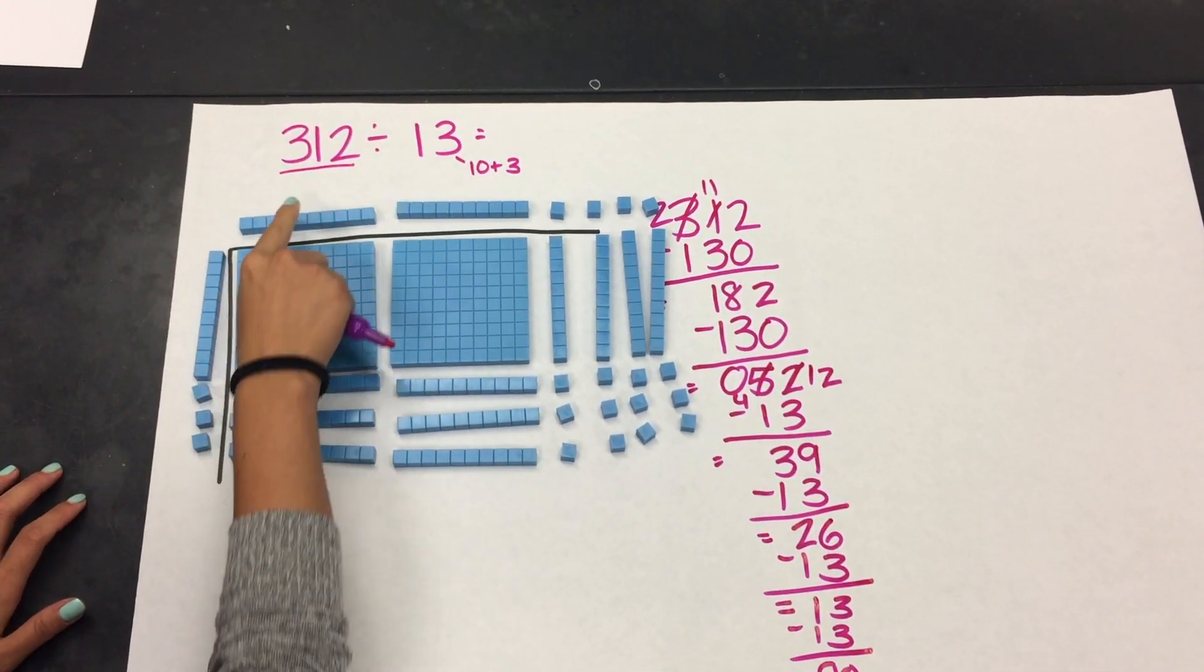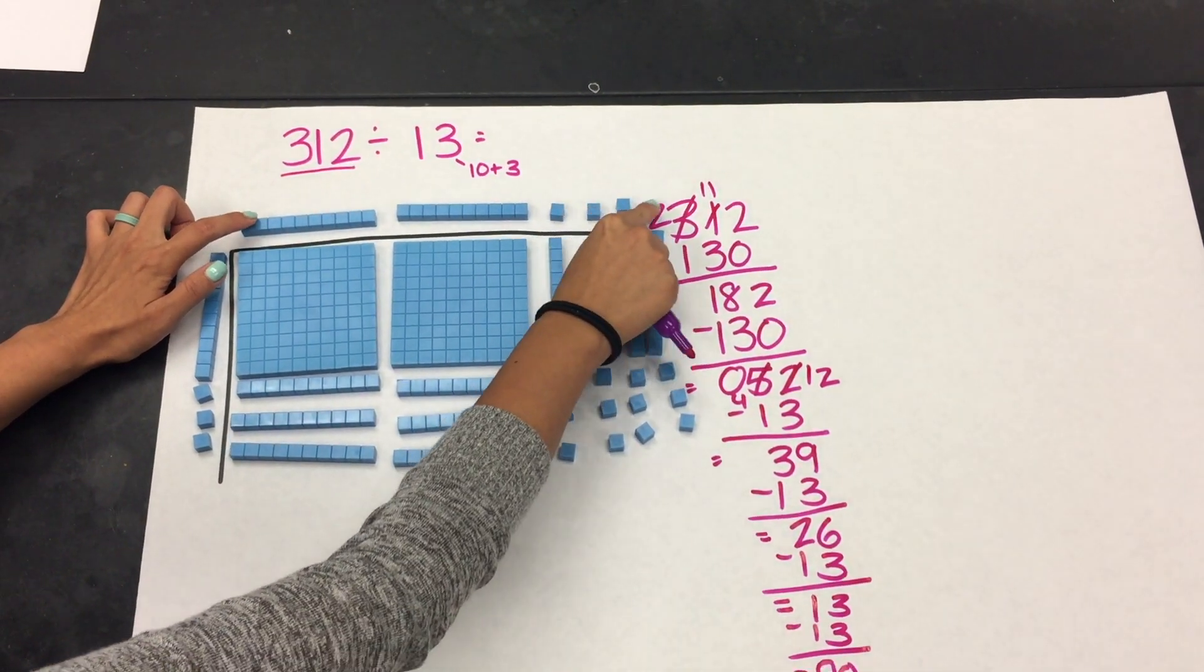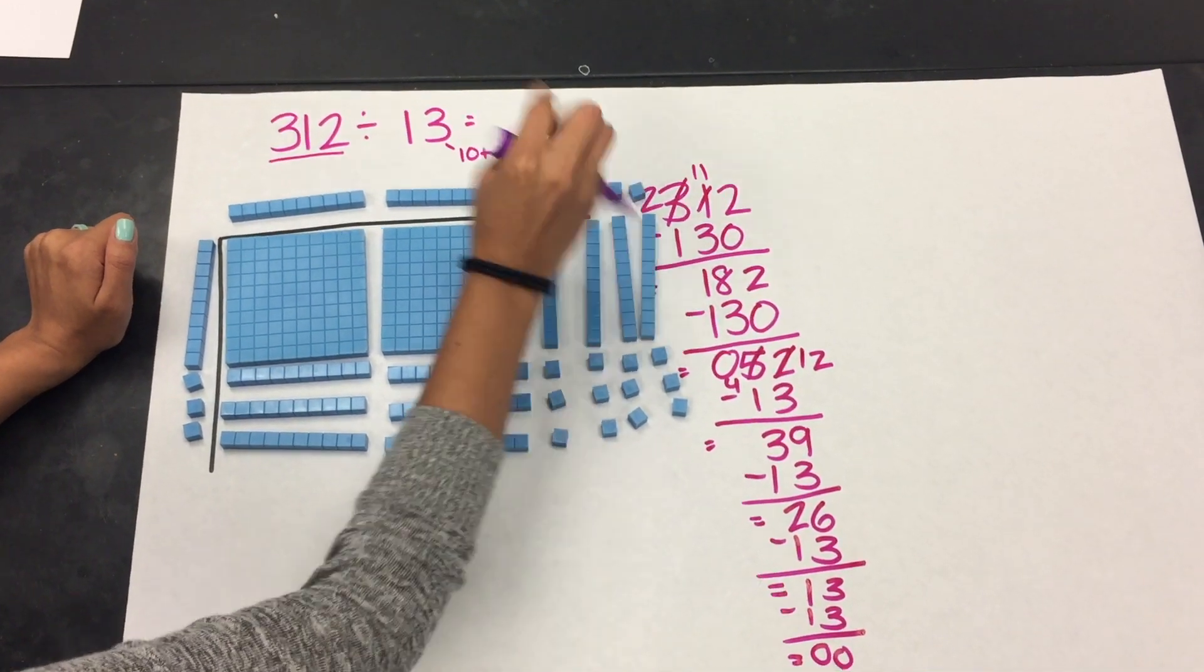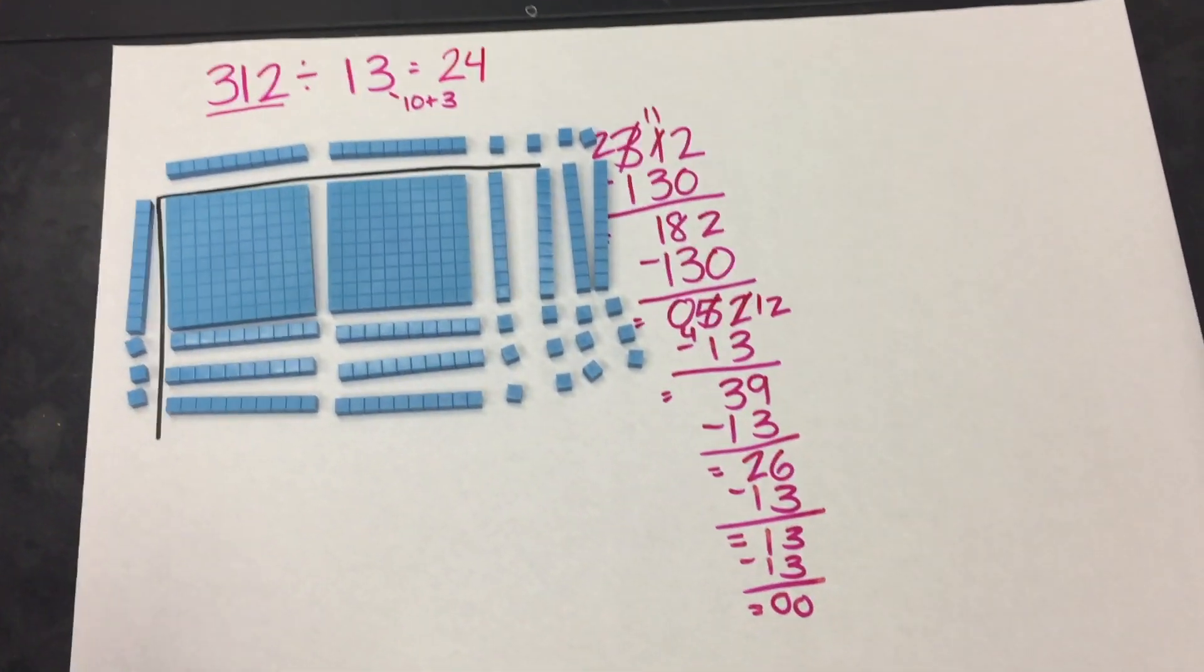To figure out my quotient, I'm going to look at my top and the parts that I built. So I have 10, 20, 21, 22, 23, 24. So my quotient is 24.